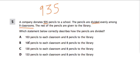So, here they're giving us the numbers, and we have to realize that we're going to divide the pencils evenly, which means we'll give all of the pencils to nine classrooms so that each classroom gets the same amount. That's what division really is all about — you have 935 things and divide them evenly, the best you can, among nine people.